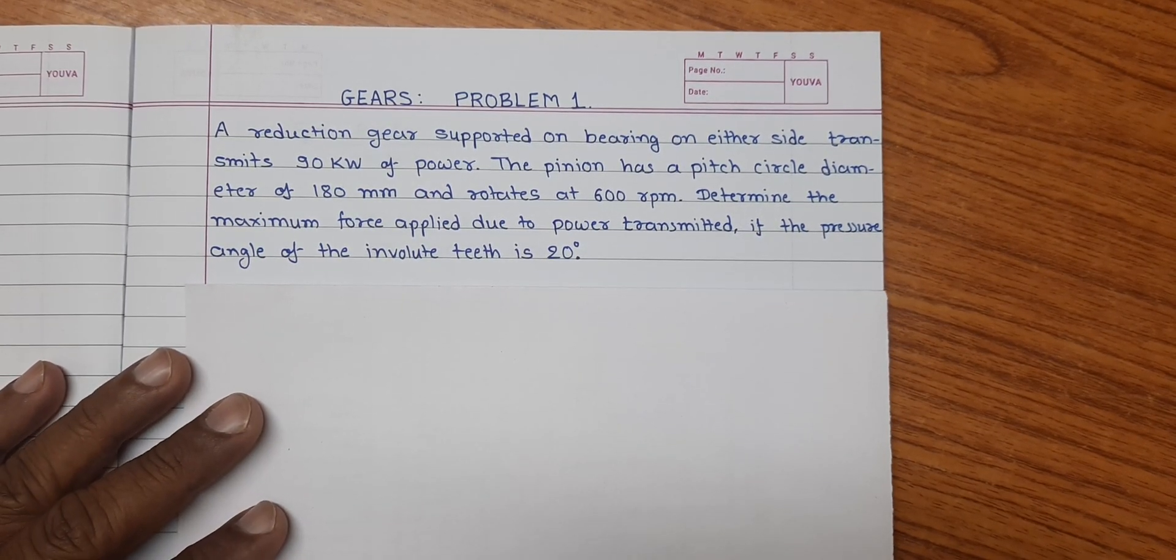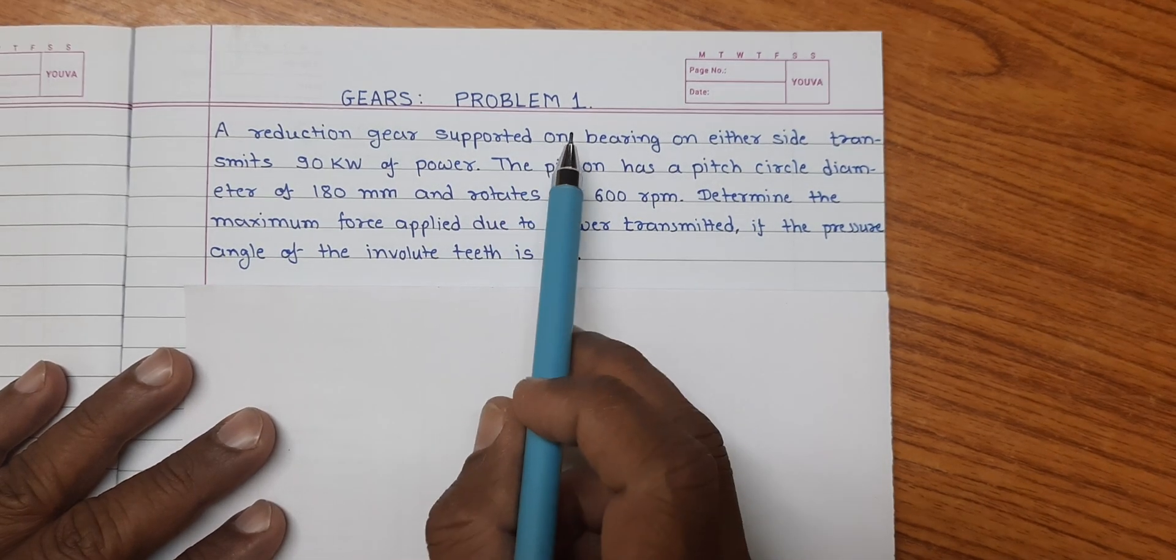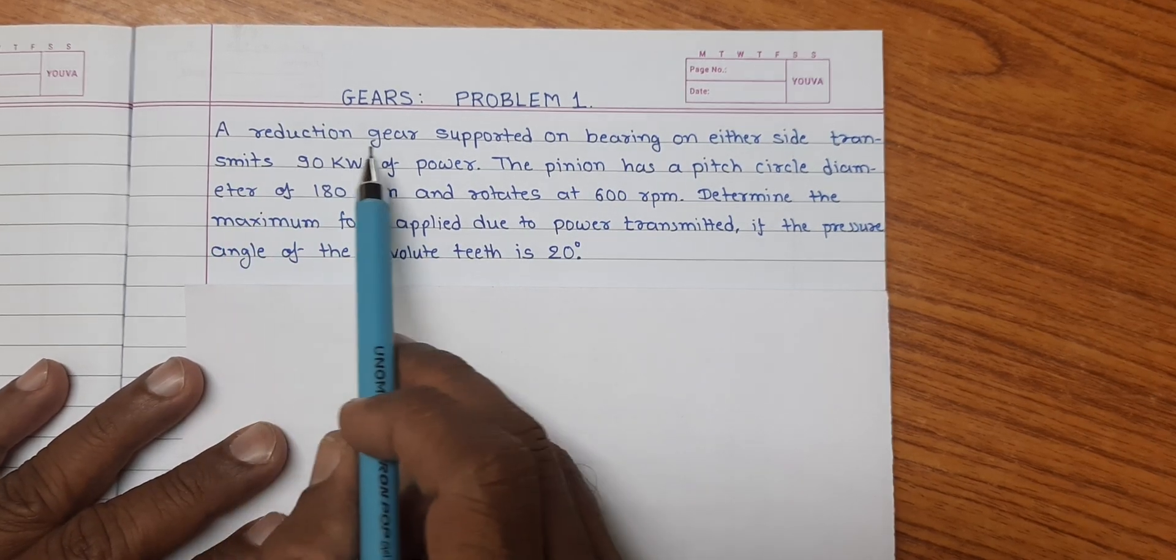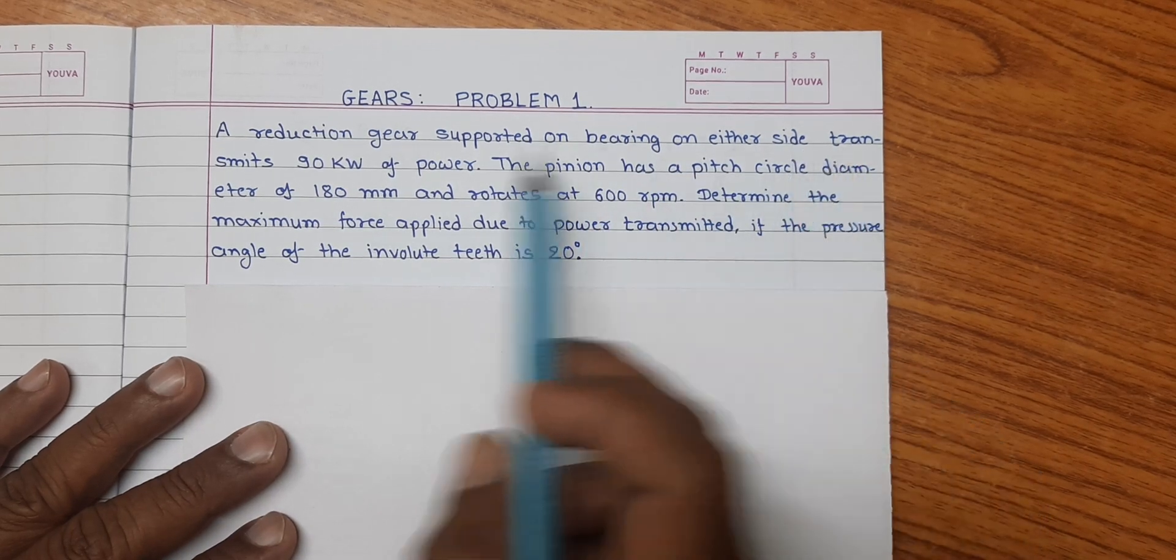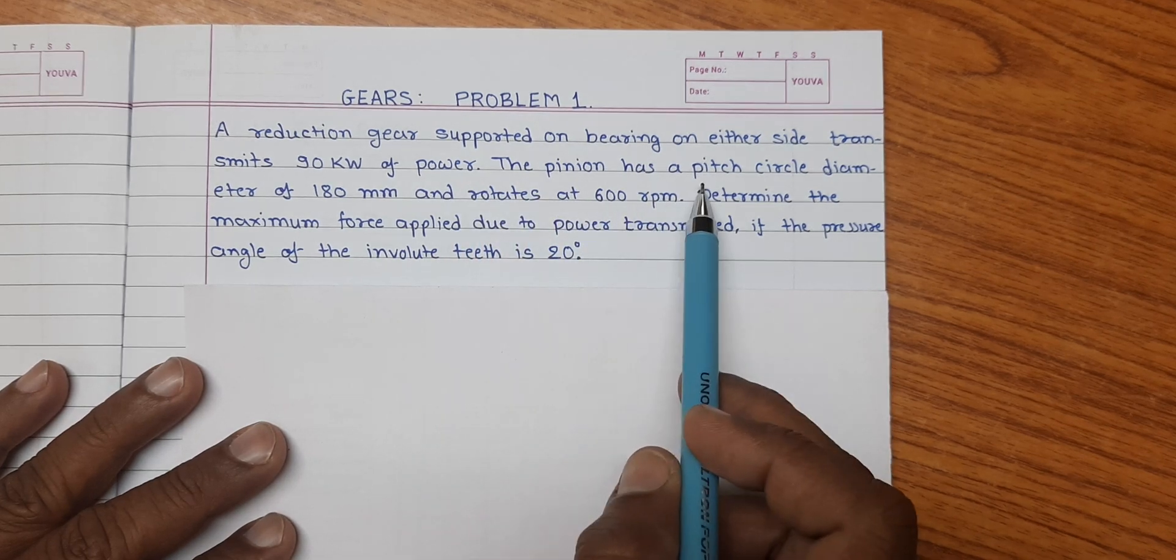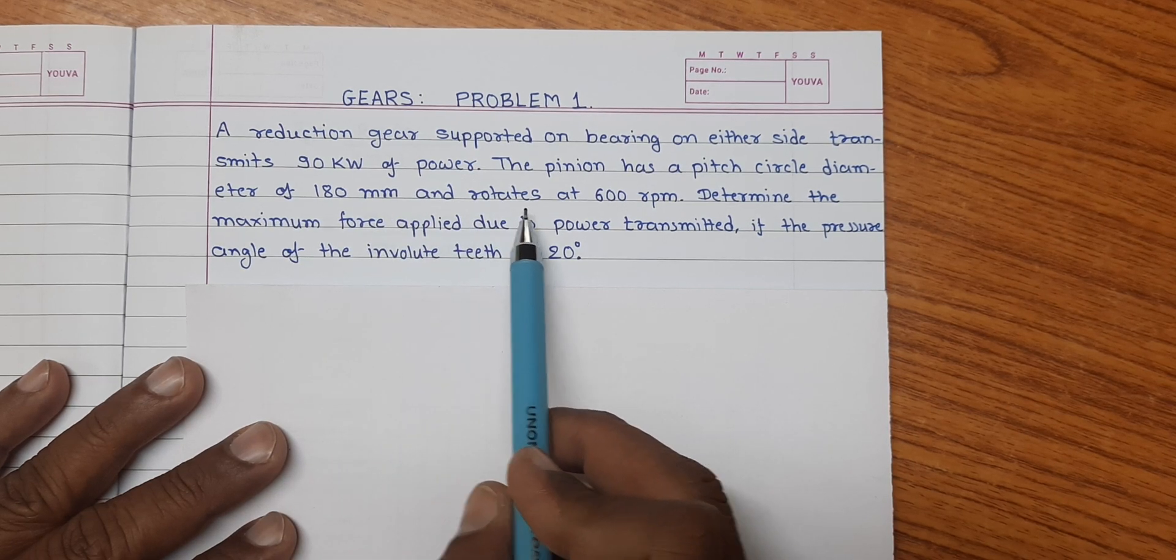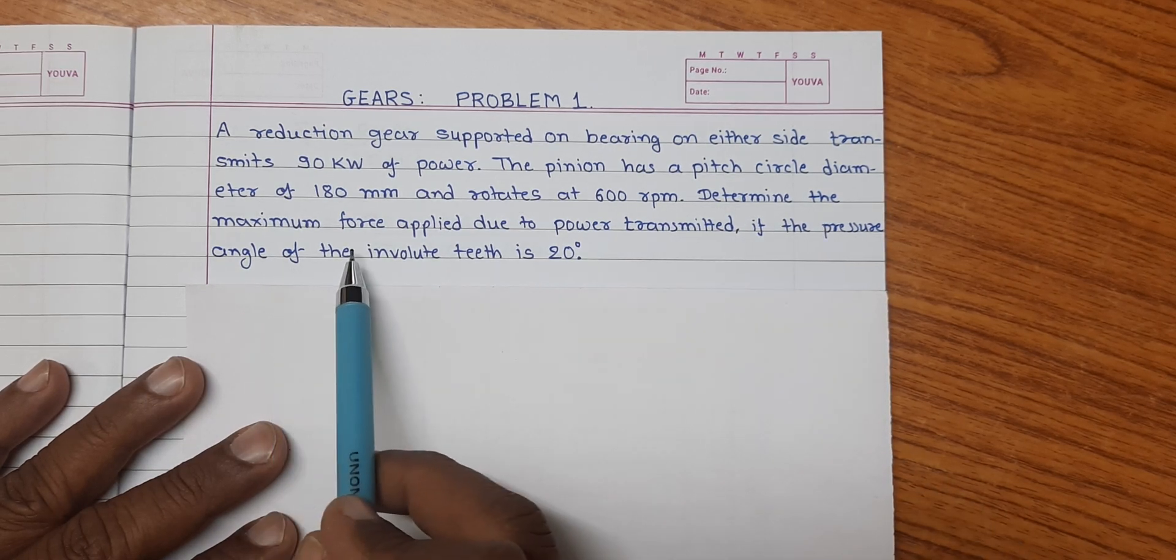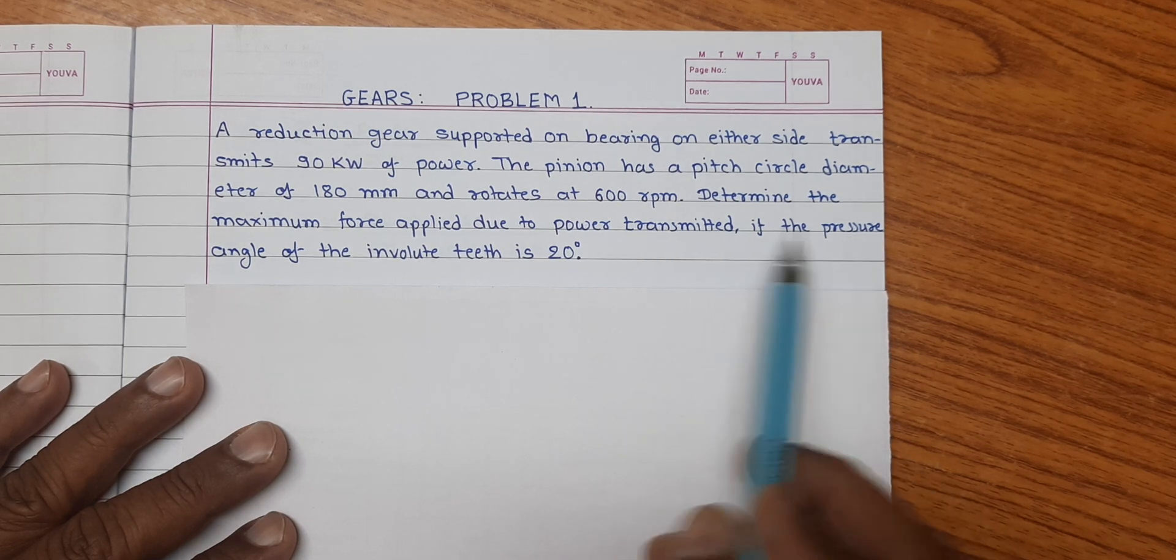Dear friends, welcome to the problems of gears, problem number one. The data of the problem is a reduction gear supported on bearings on either side transmits 90 kilowatt of power. The pinion has a pitch circle diameter of 180 millimeter and rotates at 600 rpm. Determine the maximum force applied due to power transmitted if the pressure angle of involute teeth is 20 degree.